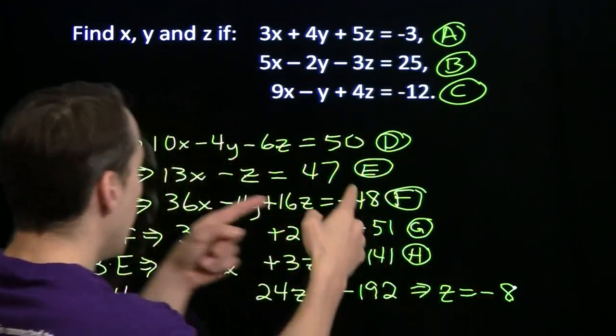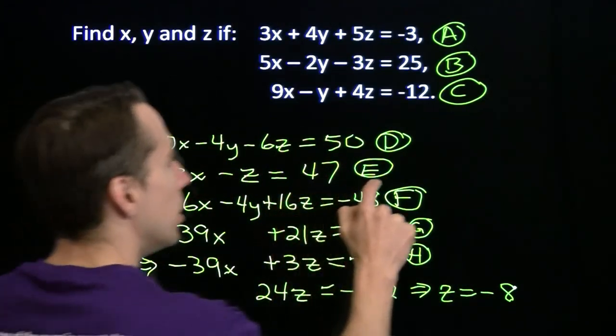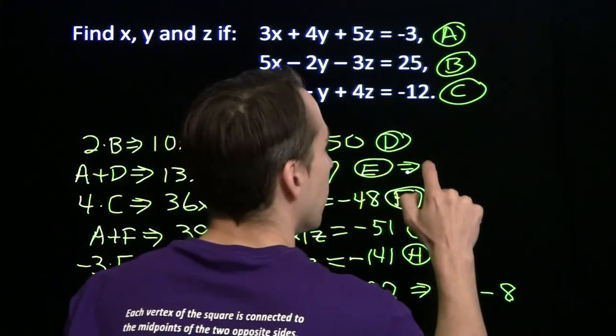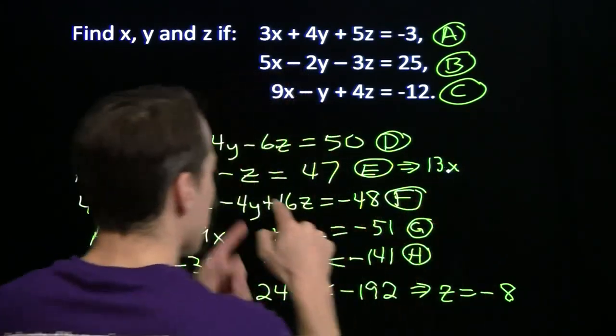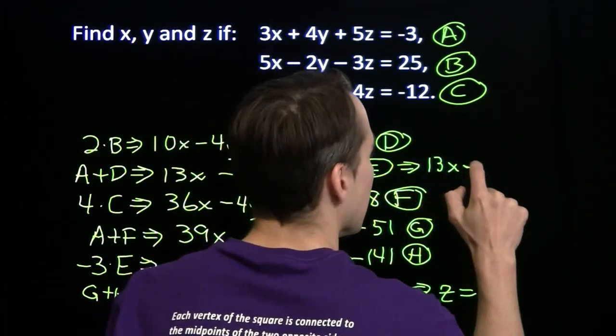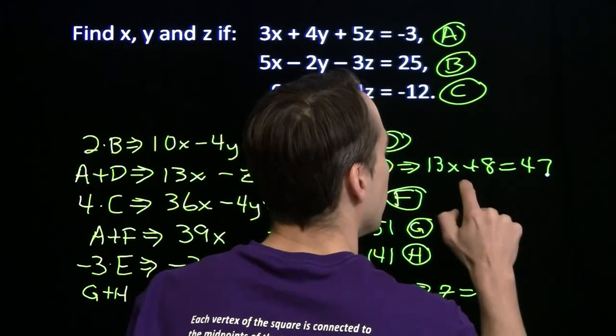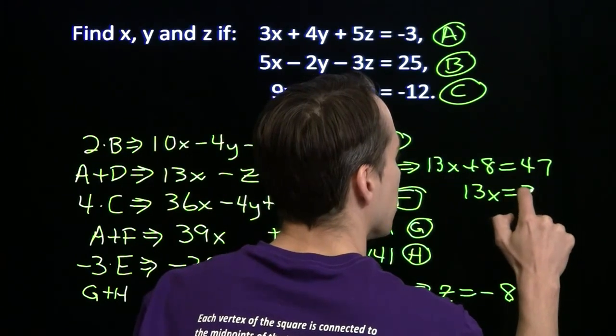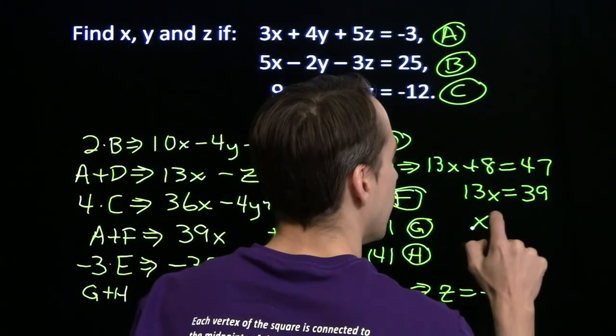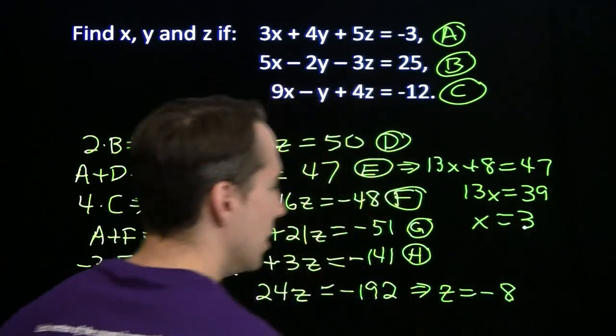Now I can take that negative 8 and put it back in up here to figure out what x is. We have 13x minus negative 8, that's plus 8 is 47. 13x is 39, x is 3.